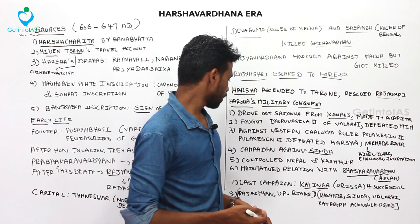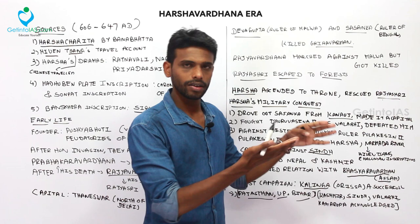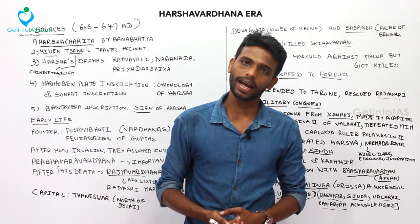Harsha occupied important territories in modern-day Rajasthan, Uttar Pradesh, and Bihar. Like the Gupta Empire, he expanded his empire in the north. Kashmir, Sindh, Vallabhi, and Kamarupa acknowledged him and paid taxes. He expanded control over most parts of north India.